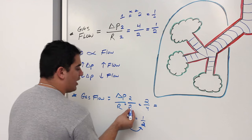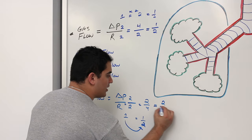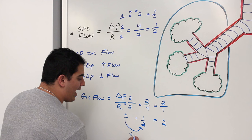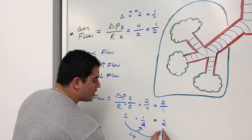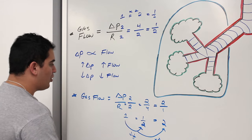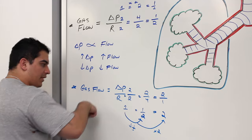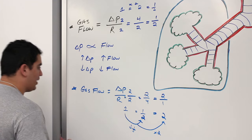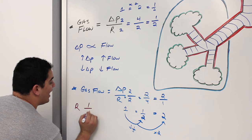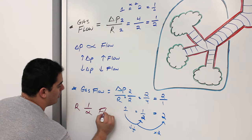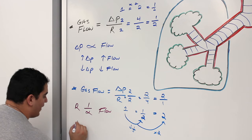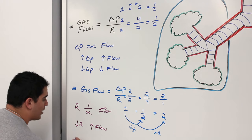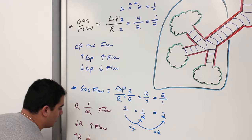Now let's explain how this happens in the body. If I decrease the resistance, what is that going to do to the flow? It's going to increase the flow. If I increase the resistance, that should decrease the flow. This is the hinging point of this entire video. We want to understand not just the formula, but what affects these things.